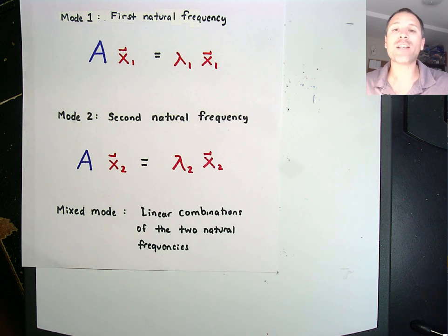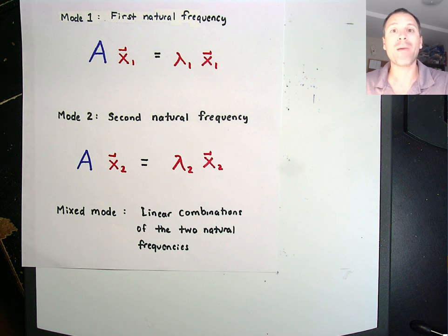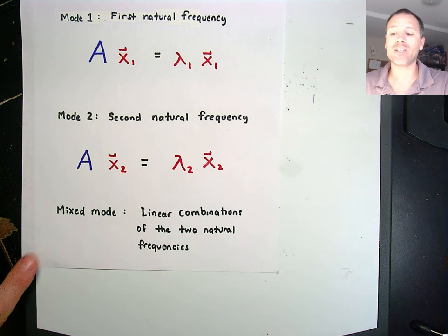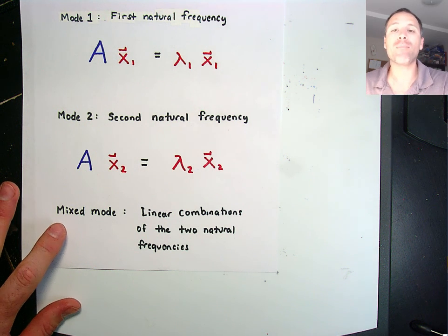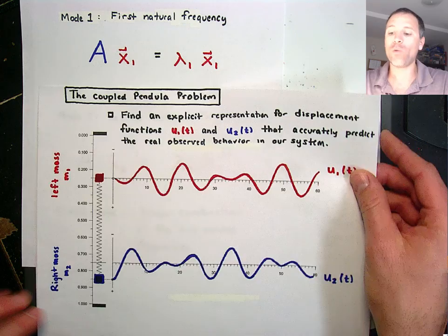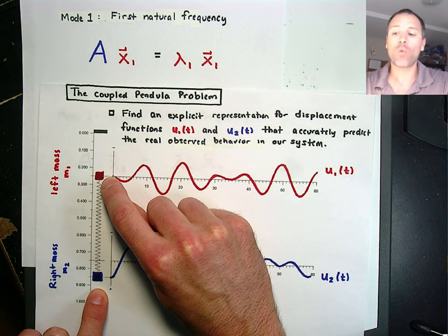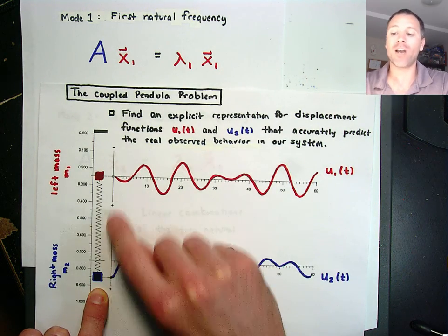One of the most awe-inspiring features of our process of translating the coupled pendulum problem into an eigenvalue problem is when we have the mixed mode oscillation. When we set both masses with separate displacements, so they're not the same, and they're kind of doing this crazy complex functional behavior,